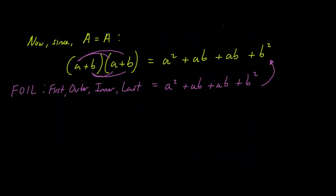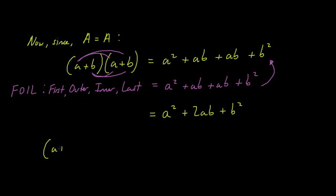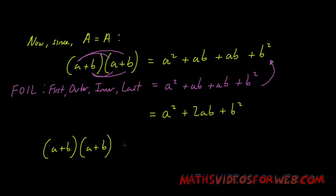Now let's simplify this result. If we simplify it, we get a squared plus 2ab plus b squared. So we've proven that (a + b) multiplied by (a + b) equals a squared plus 2ab plus b squared.